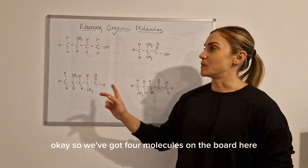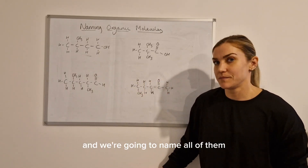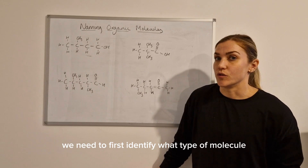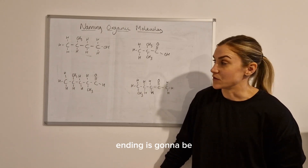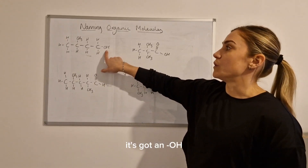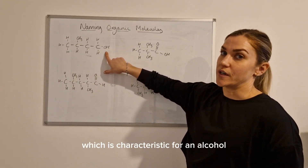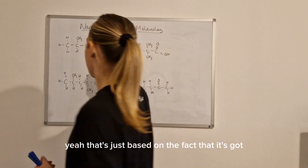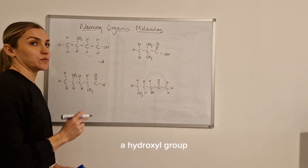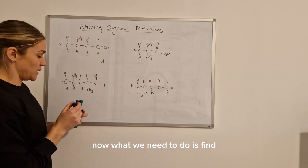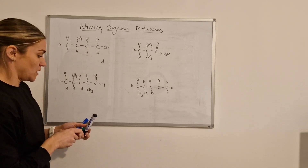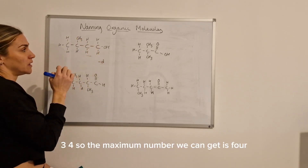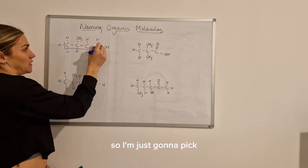We've got four molecules on the board here and we're going to name all of them. When naming them we need to first identify what type of molecule they are so we can identify what their name ending is going to be. If we look at this first molecule, it's got an OH hydroxyl group on it, which is characteristic of an alcohol, so the name of this molecule is going to end in -ol. Now what we need to do is find the longest chain of carbons: one, two, three, four — the maximum number we can get is four.